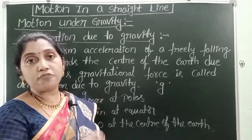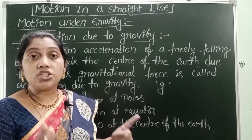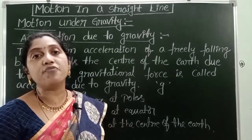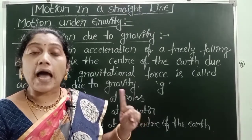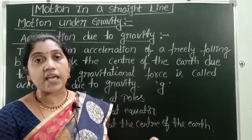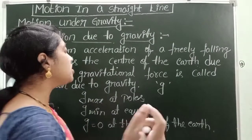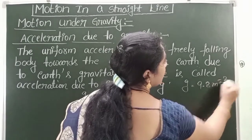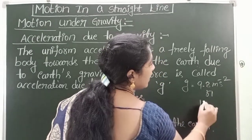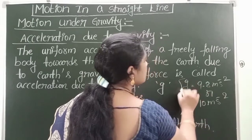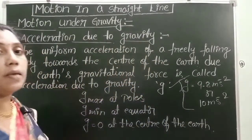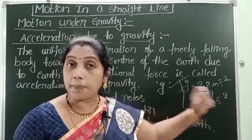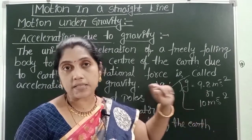The value of G does not depend upon the shape, size, and mass of objects. Whatever the shape of the objects, acceleration due to gravity value is constant. Generally, the value of G is 9.8 m/s² or 10 m/s². Remember these two values — in problems, maximum we can take these two values only.